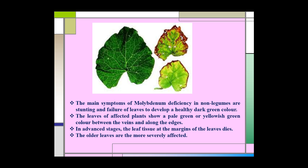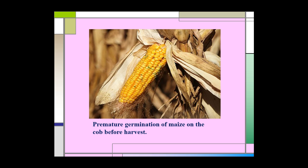The main symptoms of molybdenum deficiency in non-leguminous plants are stunting of the plant and failure of leaves to develop a healthy dark green color. The leaves of affected plants show a pale green or yellowish-green color between the veins and along the edges. In advanced stages, the leaf tissue at the margins dies. The older leaves are more severely affected. In maize, premature germination of grains occurs before harvesting.